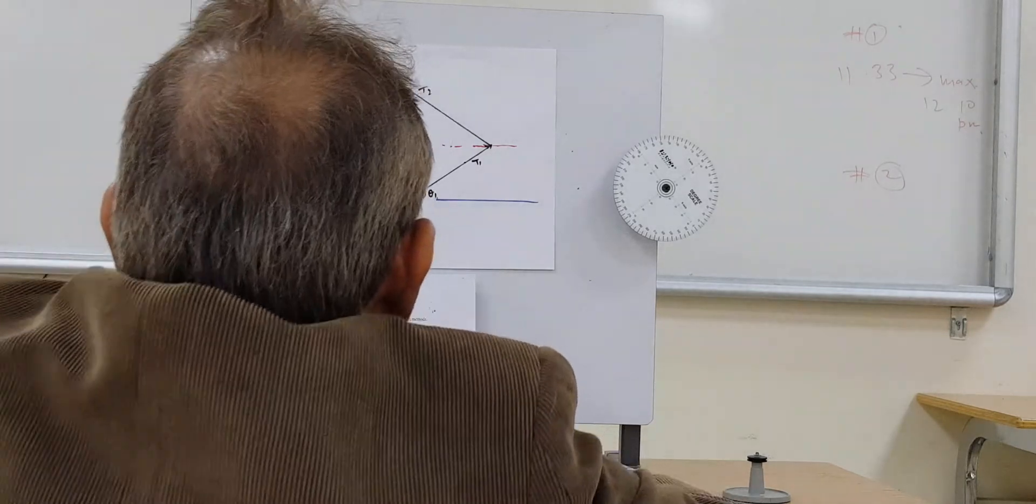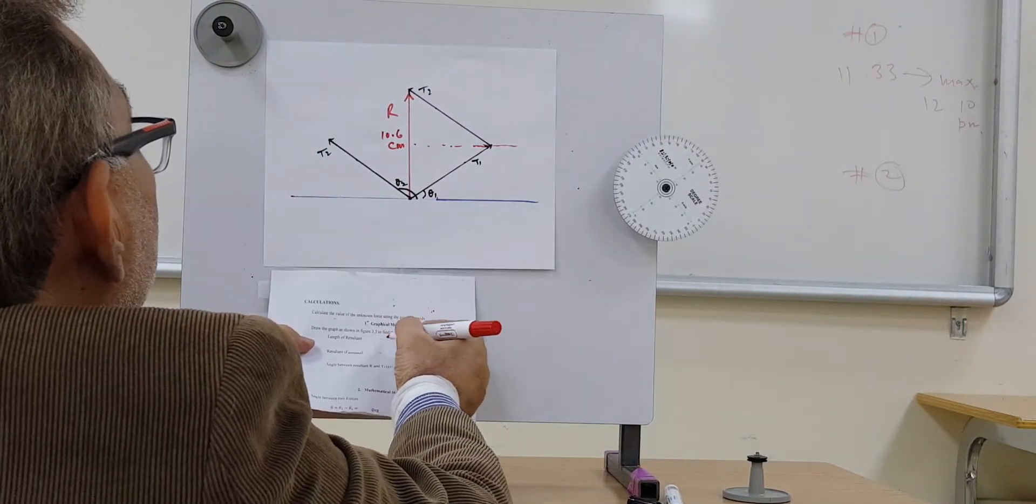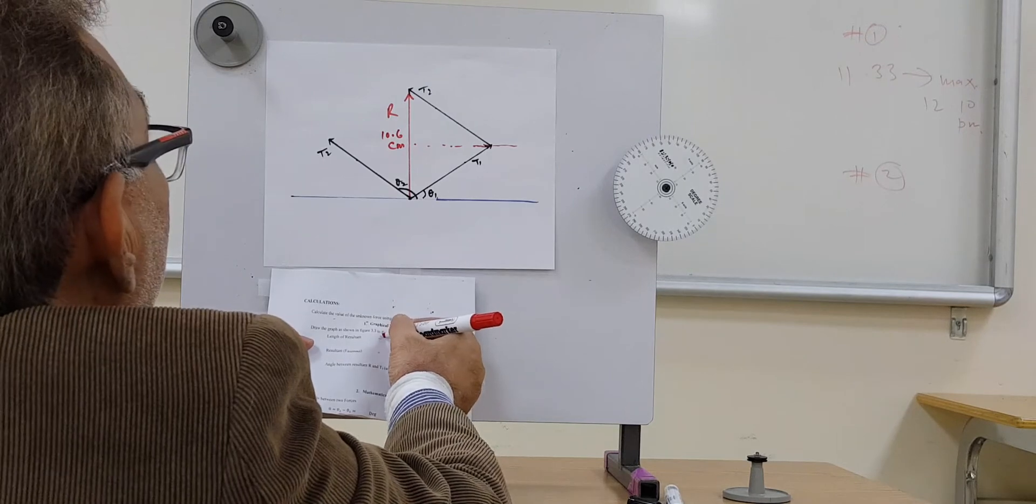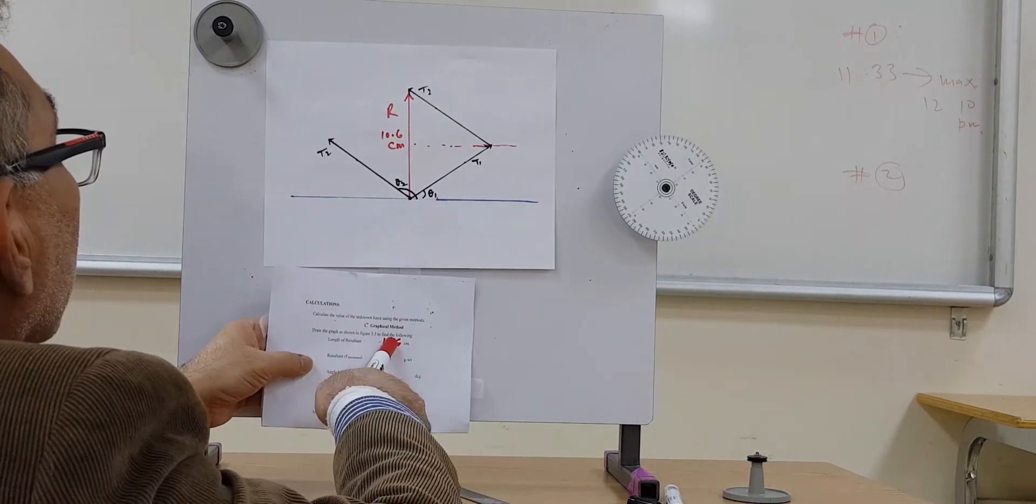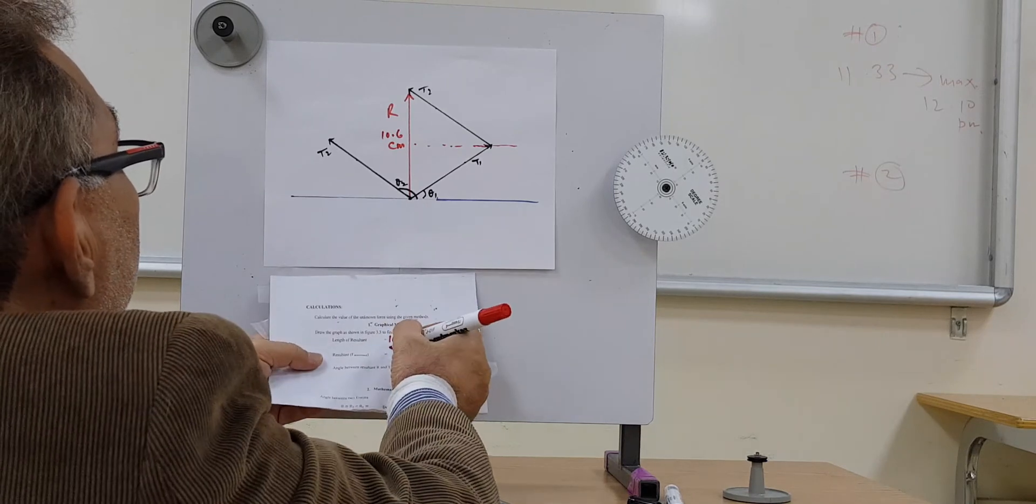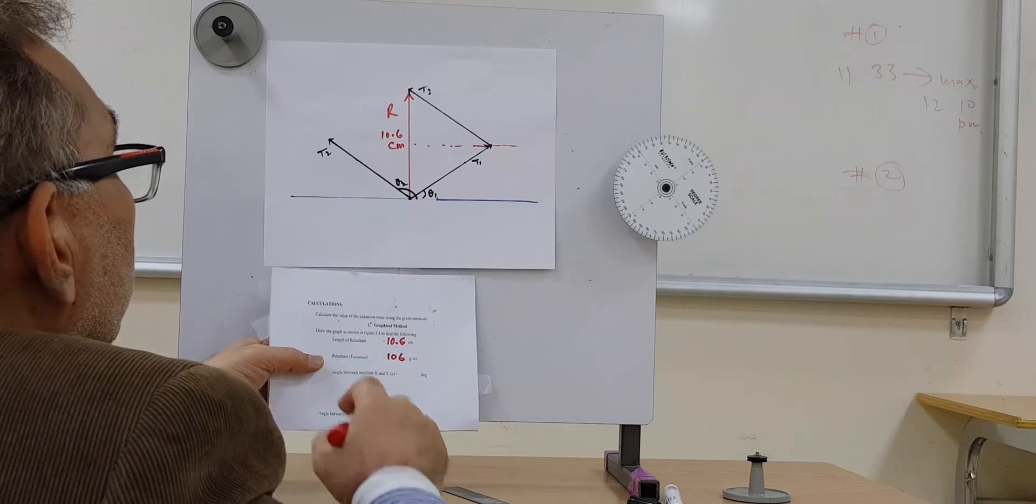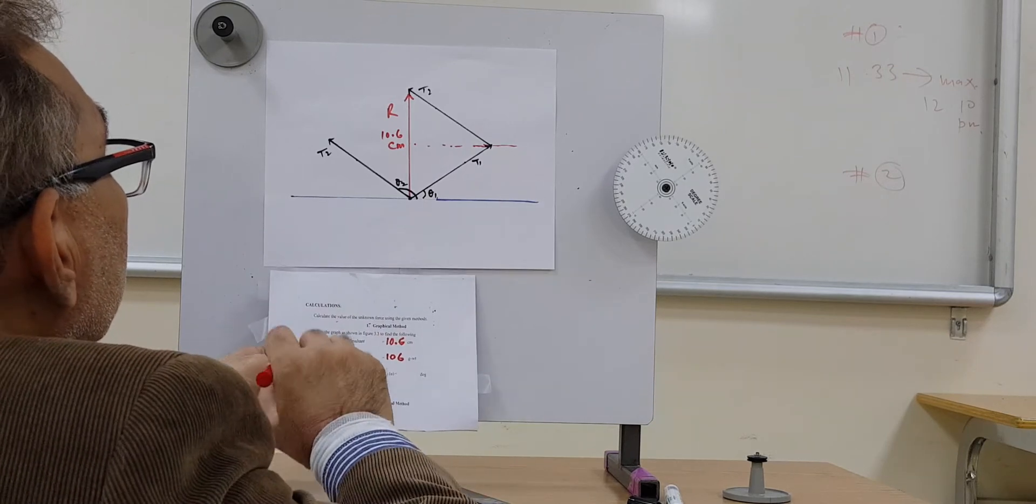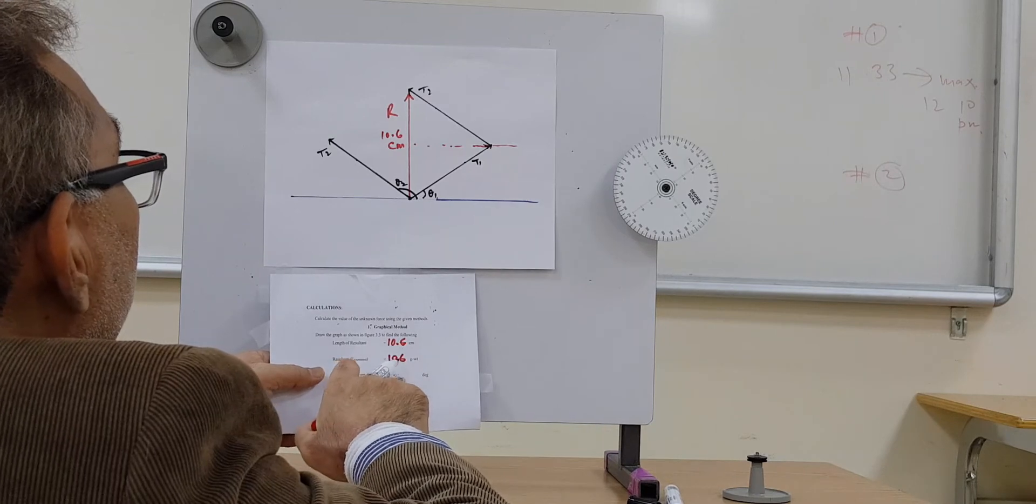Now I write it here. Resultant in centimeters, 10.6. And multiply by 10, we'll be getting 106. You remember the real value was 106.13 from the balance, and this is very close. So we are doing good.